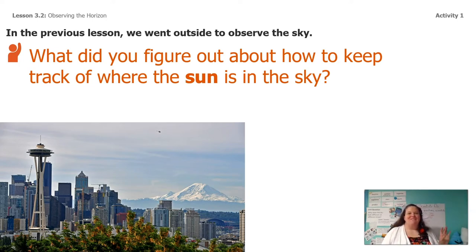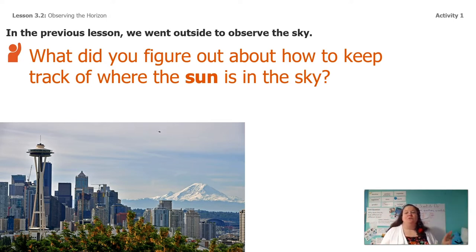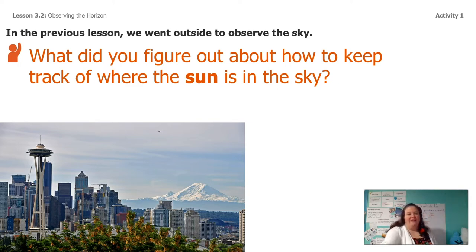So let's look at our picture of Seattle here. I added this because I want to remind you guys about what we talked about — the special line where it looks like the sky meets the earth. Do you guys remember what we called that special line? If you look at my picture of Seattle, do you see how there's sort of a line where the sky meets the earth?